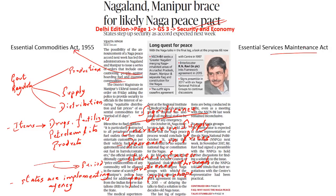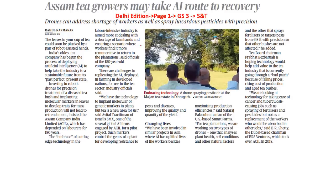This is what the Essential Services Maintenance Act is. So for commodities, we have the Essential Commodities Act of 1955; for services, we have the Essential Services Maintenance Act. The entire analysis of the Naga Peace Accord will be discussed in the following week once we have enough points for discussion. Now let's look into the next article.